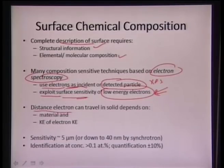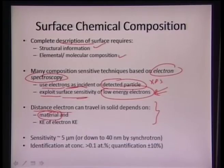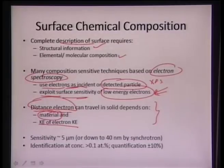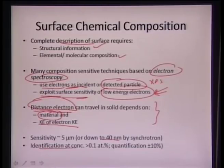The distance an electron travels depends on the kind of material it interacts with. Higher density materials cause more collisions, and electron penetration is less. The kinetic energy of the outgoing electron will be very high if the binding energy is very low. If the binding energy is very high, the overall kinetic energy will be very low. The depth can go down to around 40 nanometers with synchrotron facility, with identification at concentrations greater than 0.1 atomic percent and quantification of ±10 percent.